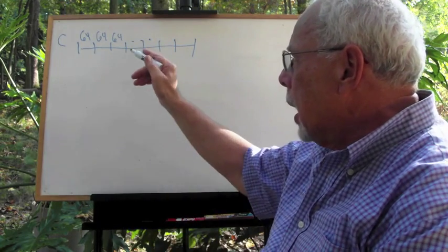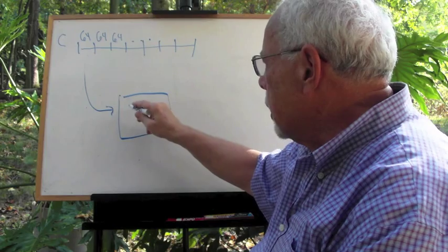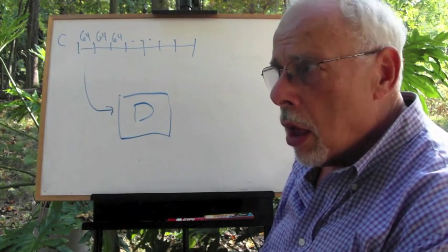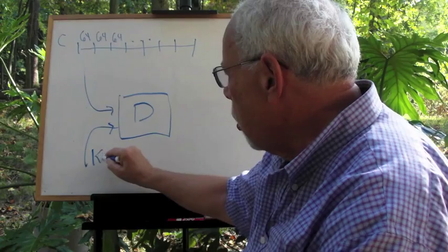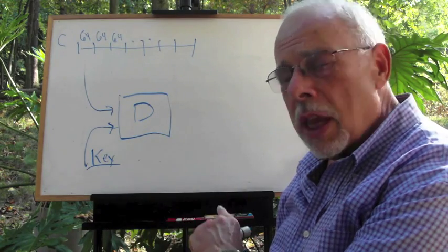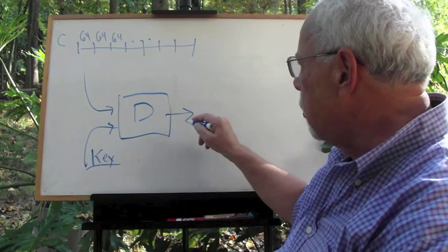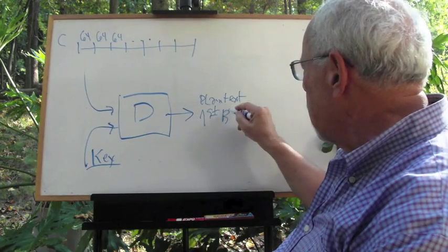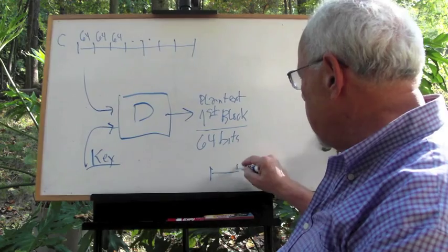Now, what they do is take the first block and input it into the block which represents the DES decryption. That is the mechanism that takes the ciphertext and uses the key, which should be the very same key. That's why it's called a symmetric cipher. The very same key used for encryption is used for decryption. And the result here is the plaintext—the first block, which is, as we designed it, 64 bits. The reader writes it here.